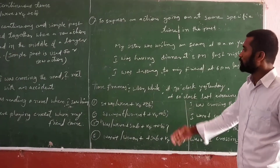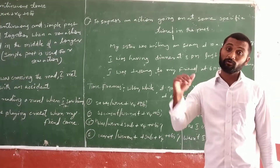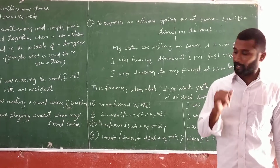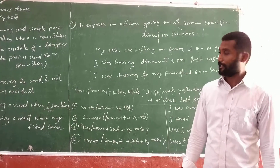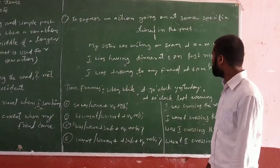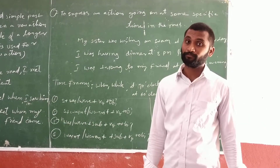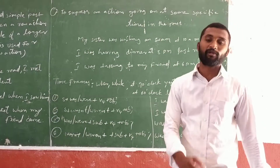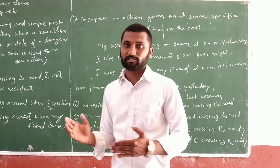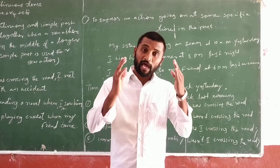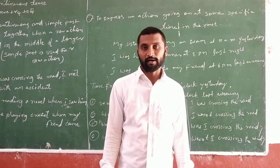Another example: 'I was having dinner at 8 p.m. last night.' What did you do last night at 8 o'clock? Actually, I was having dinner at 8 p.m. last night. 'My sister was writing an exam at 10 a.m. yesterday.' All these examples explain an action going on at some specific time in the past.